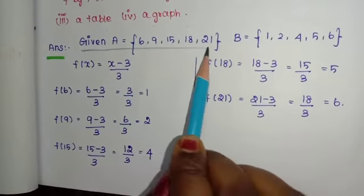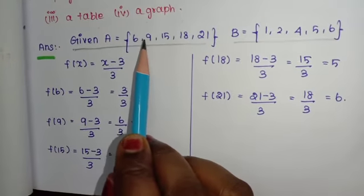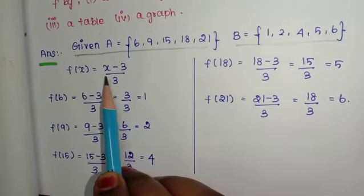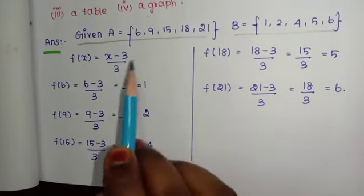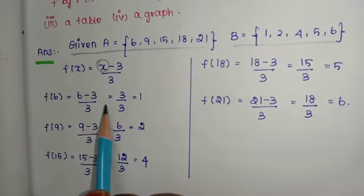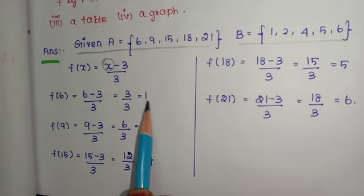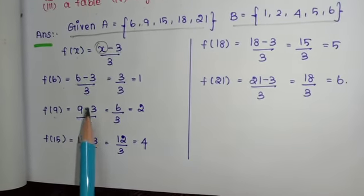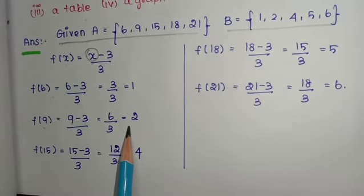Given A and B, for each element in A, we substitute into F(x) = (x − 3) / 3. F(6) = (6 − 3) / 3 = 3/3 = 1. Then F(9) = (9 − 3) / 3 = 6/3 = 2.